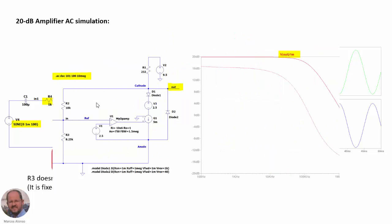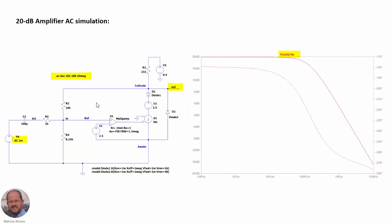Now we are going to do another simulation to obtain the AC response of this 20 dB amplifier. This is the circuit for the AC simulation, performing a dot AC analysis. We inject an AC signal using the input voltage source with the AC parameter equal to 1 mV, measure the output voltage, and divide by 1 mV to obtain the gain curve and the phase. We can see the amplifier keeps the gain of 20 dB nearly up to 100 kHz. If we modify the value of R3, the change in the response is almost negligible, so the role of R3 in the AC response can be neglected.